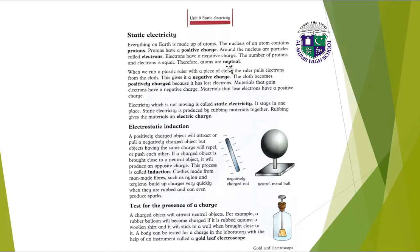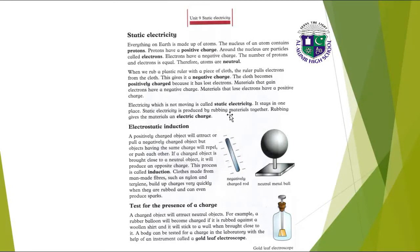Atoms are neutral. When we rub a plastic ruler with a piece of cloth, the ruler pulls electrons from the cloth. This gives it a negative charge. The cloth becomes positively charged because it has lost electrons. Materials that gain electrons have a negative charge; materials that lose electrons have a positive charge. Electricity which is not moving is called static electricity — it stays in one place. Static electricity is produced by rubbing materials together, giving them an electric charge.